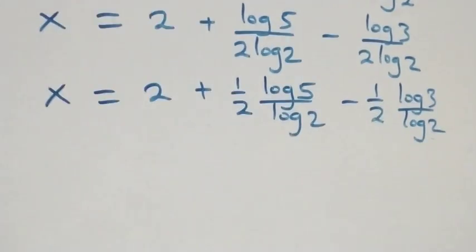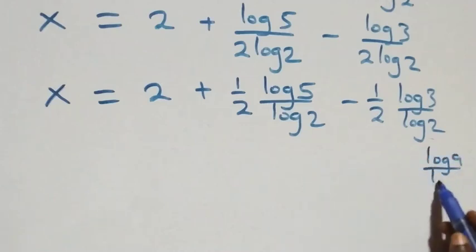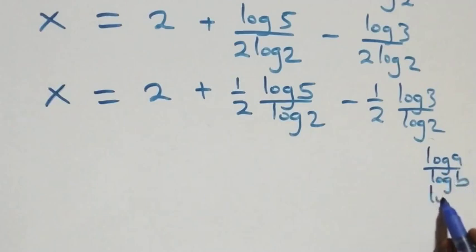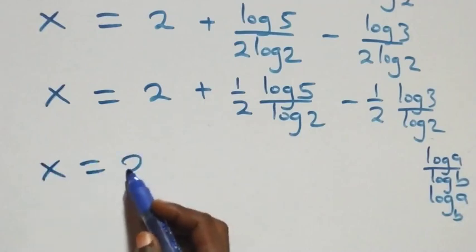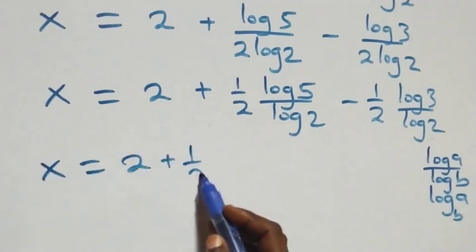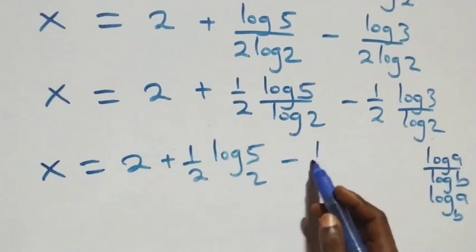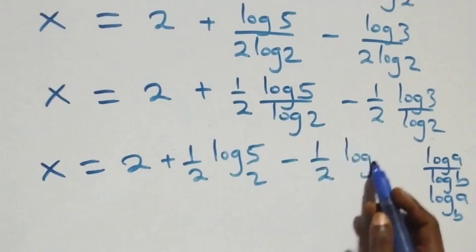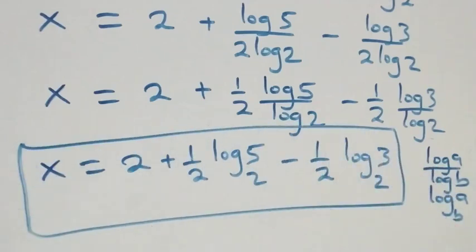We apply the change of base rule: log a over log b can be written as log base b of a. So the final answer becomes x equals 2 plus one-half log base 2 of 5, minus one-half log base 2 of 3. Now let's check if this satisfies the given problem.